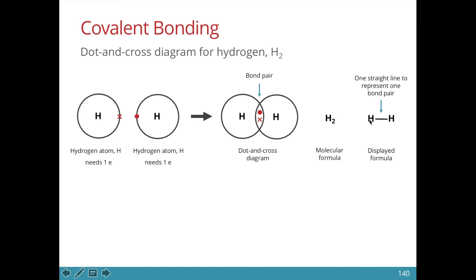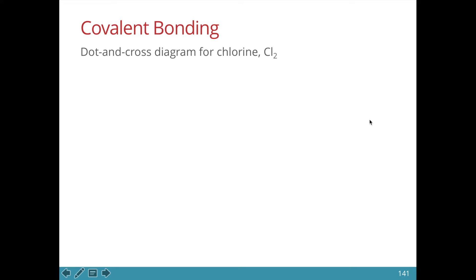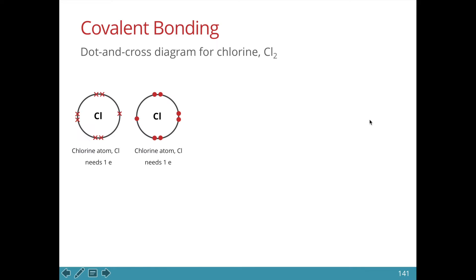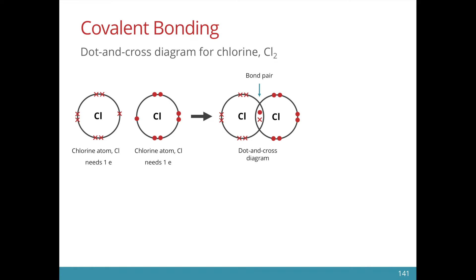Now let's look at chlorine. Chlorine is in group 7, so it has seven valence electrons. It needs one more to have a complete valence shell of eight electrons. As such, it shares one electron with another chlorine atom. We can represent the displayed formula of chlorine like so.